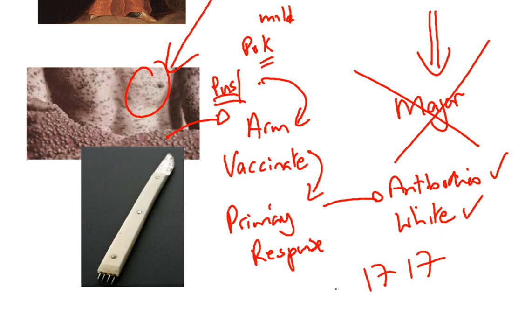Even though this sounds very good, there were a number of cases in which the inoculation using this technique called variolation actually caused smallpox and people died.